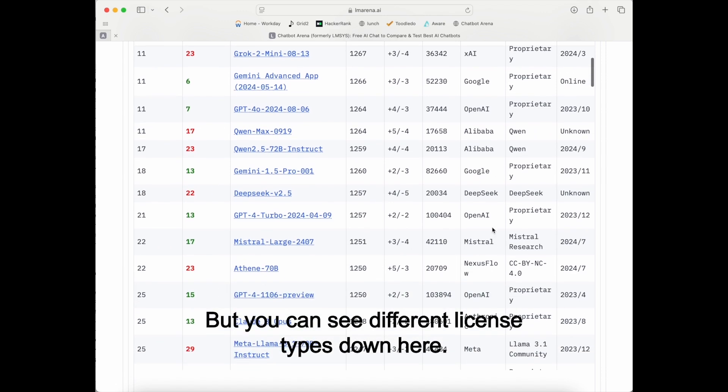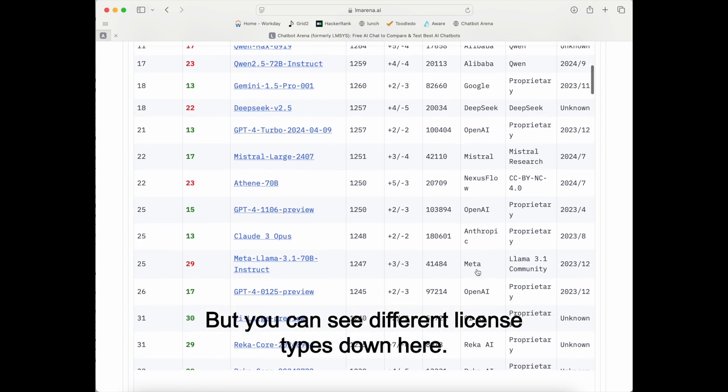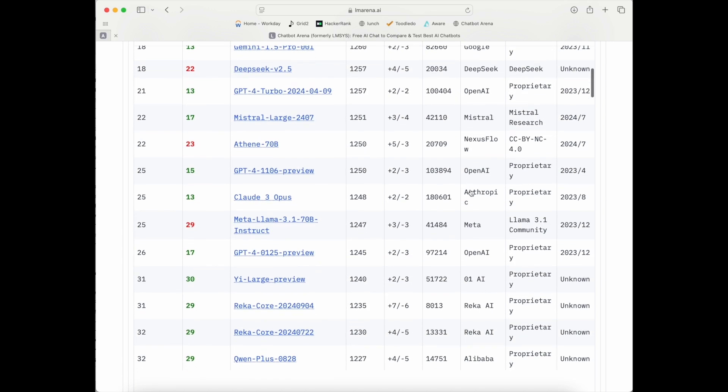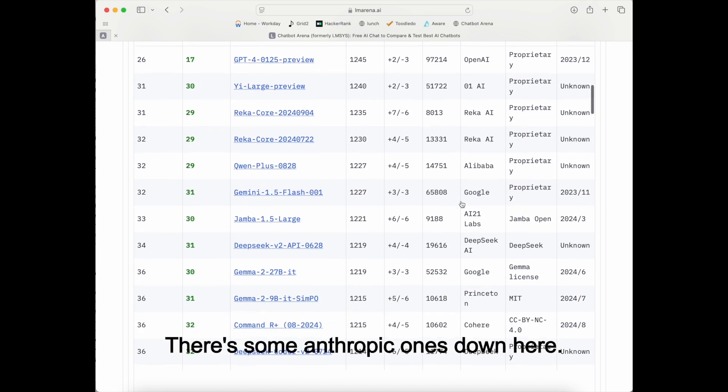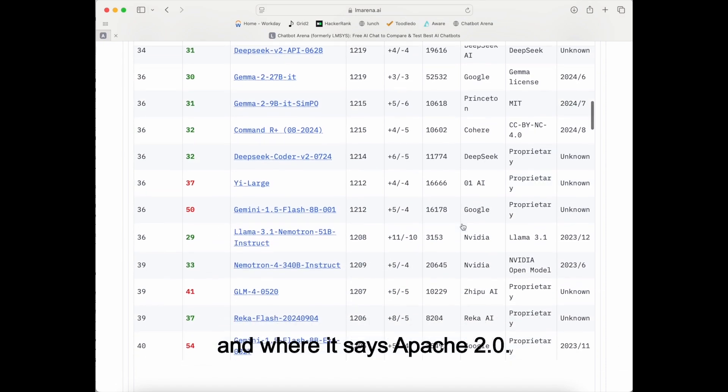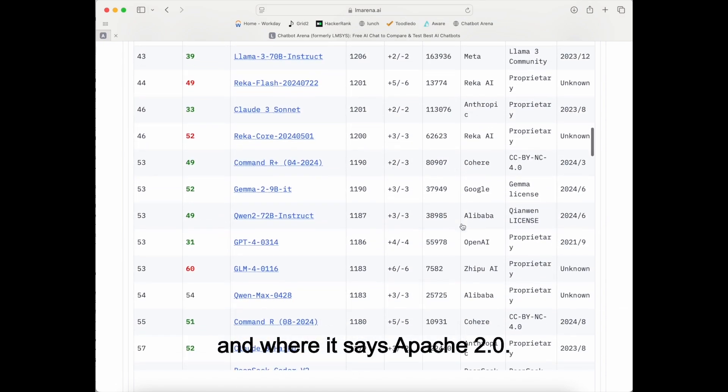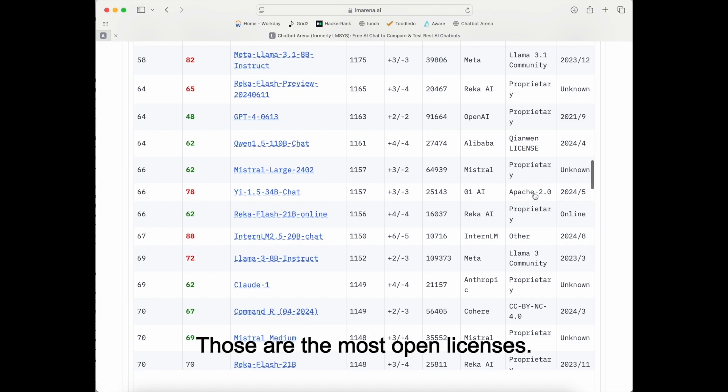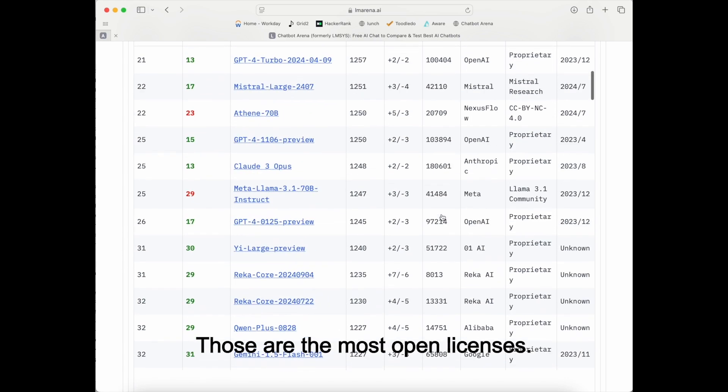But you can see different license types down here, META, MISTRAL. There's some Anthropic ones down here. There's some more open source Google ones. These licenses where it says MIT and where it says Apache 2.0. Let me find one of those. Those are the, here's one. Those are the most open licenses.